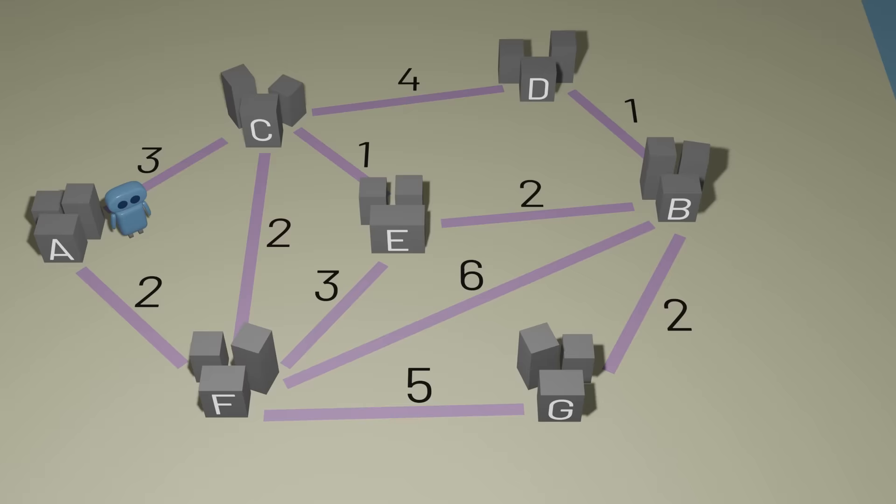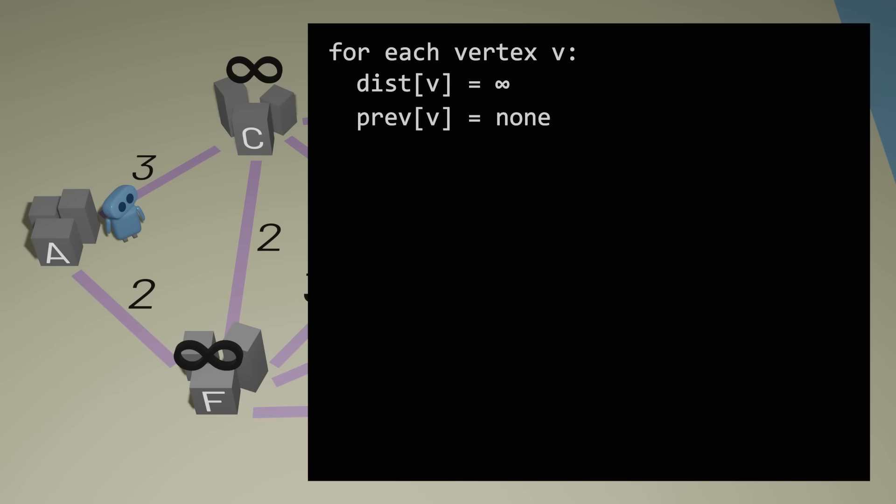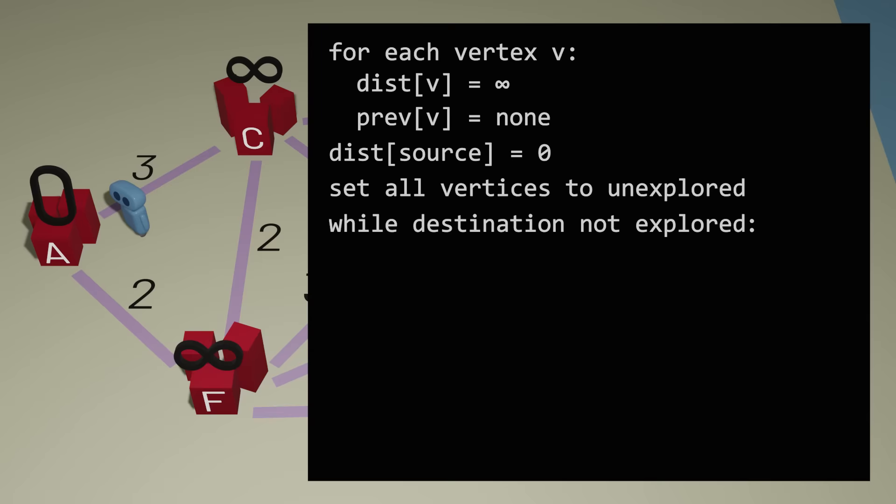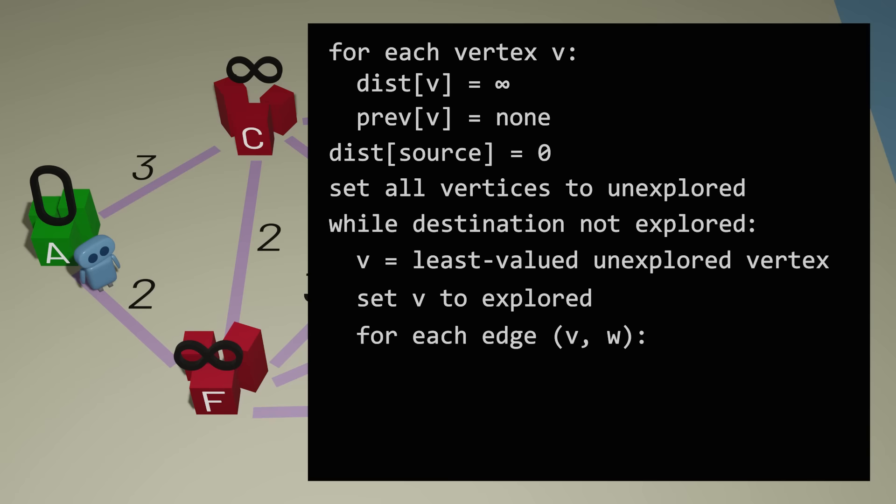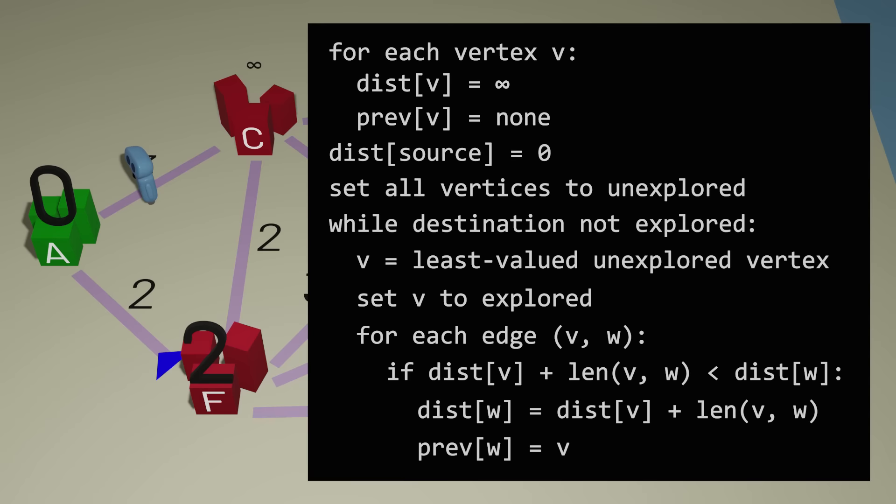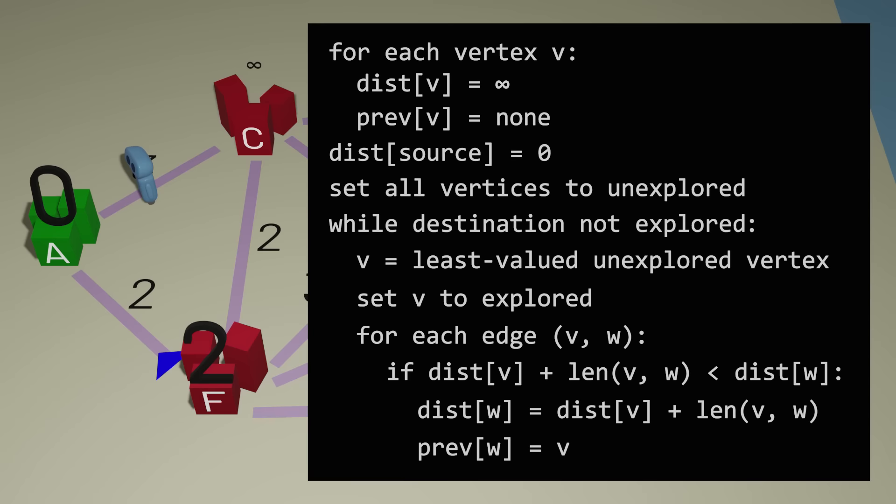And that's Dijkstra's algorithm for finding the shortest path in a graph. We keep track of a distance and a previous town for each vertex. The distance for all vertices starts at infinity, except for the source, which starts at zero. And then, as long as we haven't explored the destination yet, we pick the unexplored vertex with the smallest distance to explore next. We consider all edges connected to that vertex. And if we can come up with a shorter path to a neighboring vertex, then we'll update our distance estimate and remember which town we came from. Once we've explored the destination, we have our answer. We'll know how quickly we can get to the destination, as well as what the shortest path actually is.